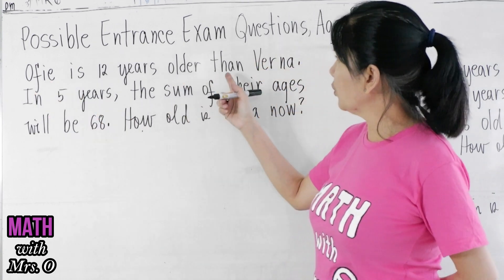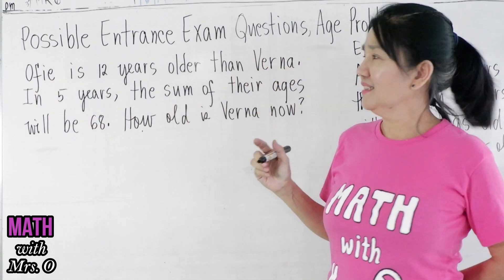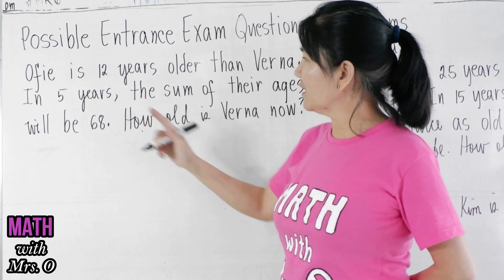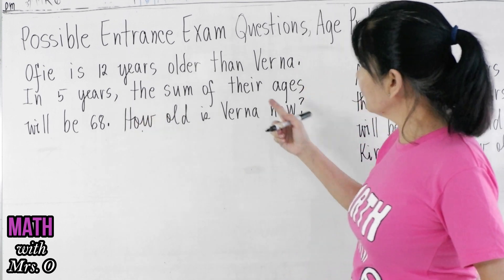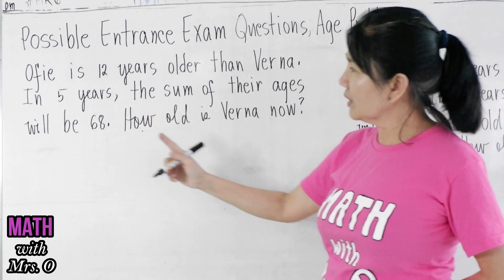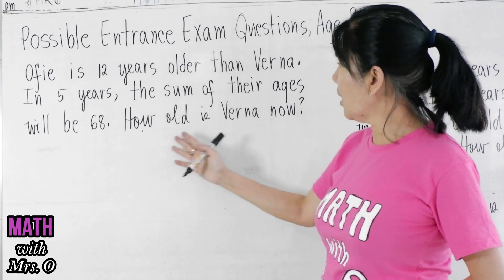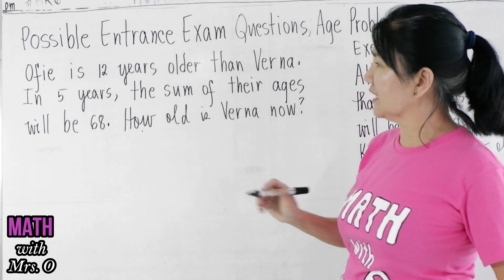Ofi is 12 years older than Verna. In 5 years, the sum of their ages will be 68. How old is Verna now?